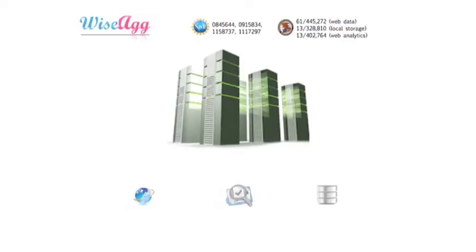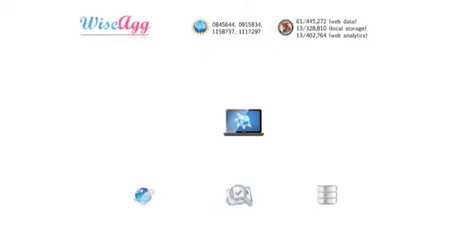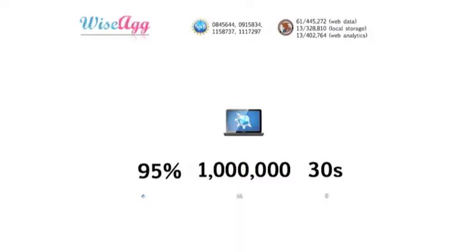This is where YSAG steps in. YSAG is going to replace the data center with just a laptop. Of course, we are not going to store all the data in a laptop, but using just the computing power of a laptop, we are going to shrink the large data resources into very small but highly representative samples, which enables us to generate accurate results. Our formal experiments have shown that we can reach 95% accuracy over 1 million files within just 30 seconds. This is why YSAG could be the next Google for aggregate information search.